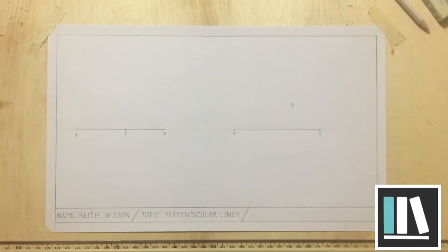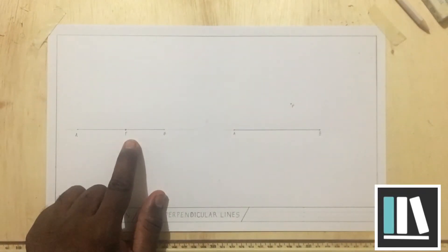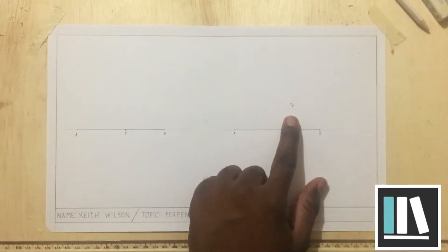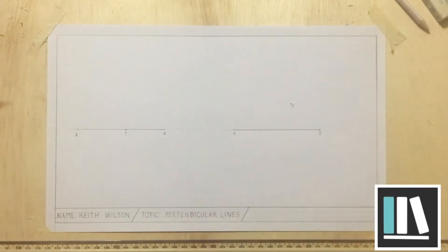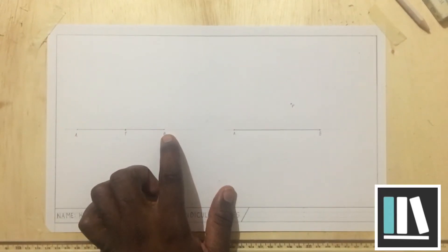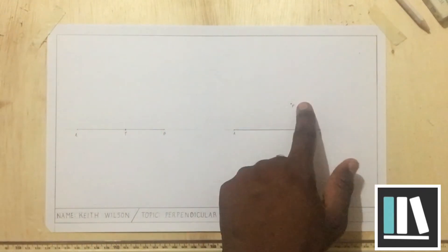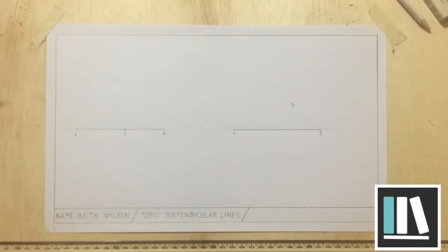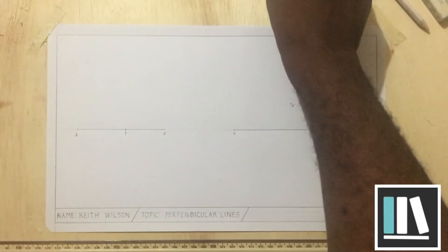So we are going to draw perpendicular lines to both lines. One passing through point P, the other passing through point P. But please note that for the first demonstration, point P is on the line, while the second demonstration, point P is outside the line. So let's start with the first demonstration.